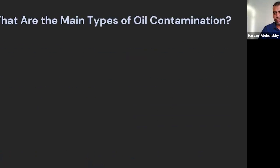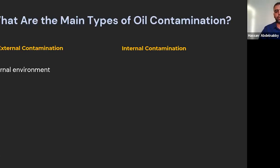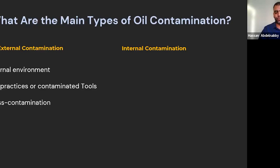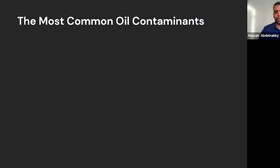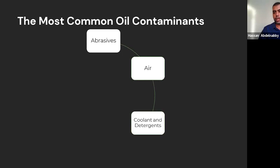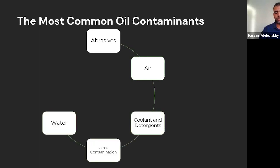What are the main types of oil contamination? We have external contamination and internal contamination. External contamination comes from the environment — dust, dirt, water, humidity, bad practices, contaminated tools, or cross-contamination. Internal contamination can come from surface degradation, oxidation, or at the end of oil life, the depletion of additives. The common contaminants we'll discuss are: abrasives, air, coolant, cross-contamination, water, and fuel.